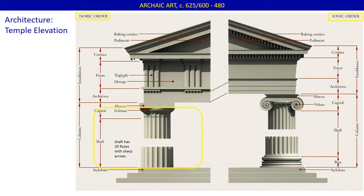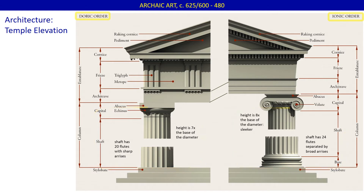The Doric shaft has twenty flutes with sharp arises. The canonical height is seven times the diameter at the base. The Ionic order is lighter and more slender, with twenty-four flutes separated by broad arises, and the height is eight times the base diameter. The horizontal section that sits on the columns is the entablature, which consists of an architrave, frieze, and cornice.